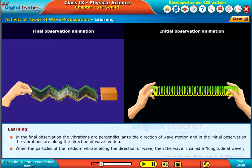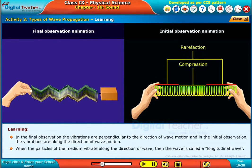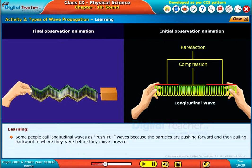When the particles of the medium vibrate along the direction of wave, then the wave is called longitudinal wave. Some people call longitudinal waves as push-pull waves because the particles are pushing forward and then pulling backward to where they were before they move forward.